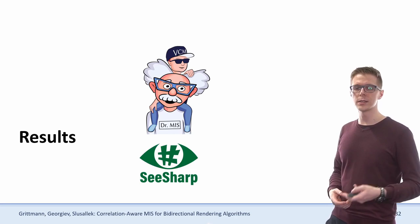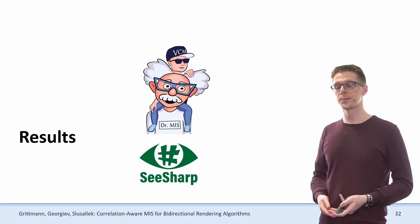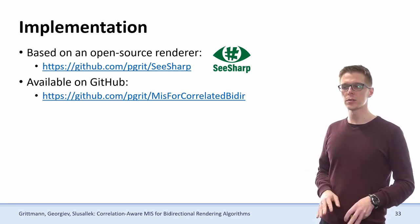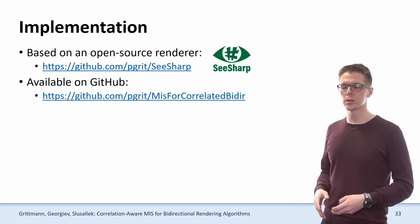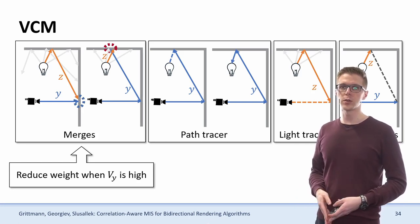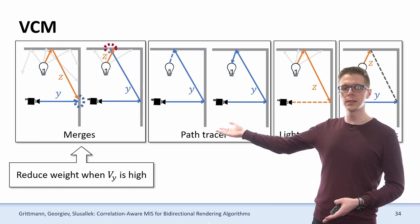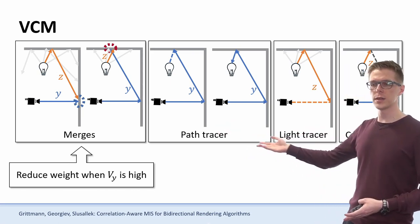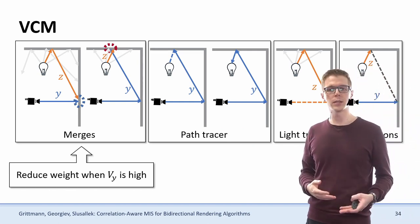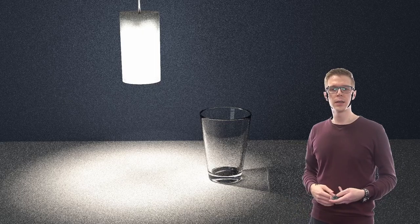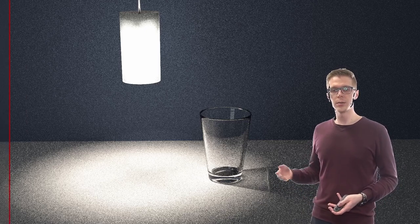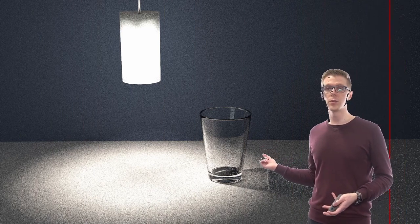Let's check out how this actually pans out in an actual renderer. We use an open source renderer available on GitHub, and all of our source code, scripts, and test scenes are also available on GitHub. In our first application, we use the VCM algorithm with merging techniques that have some correlation, a path tracer with next event, a light tracer, and some inner path connections. Our goal is to reduce the weight of those merging techniques that have high correlation. And as we've seen before, if a light is close to a surface, there can be a lot of extra noise that our heuristic gets rid of very easily.